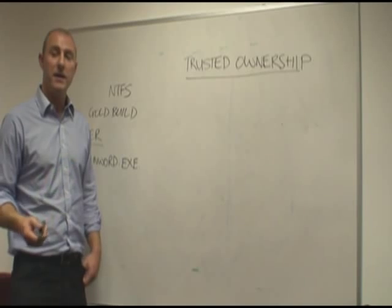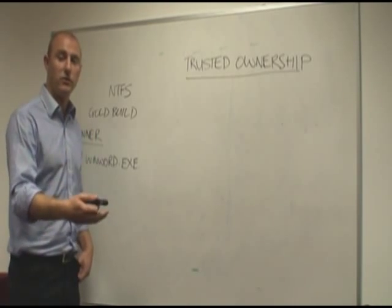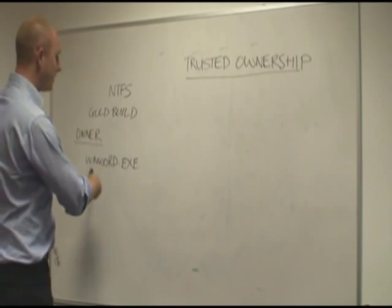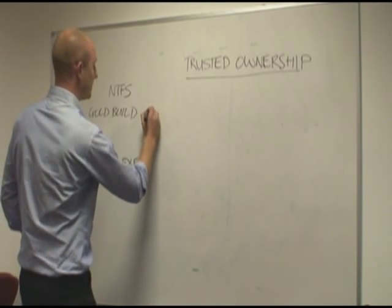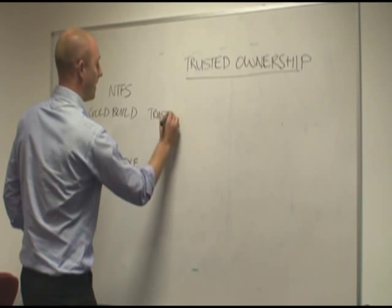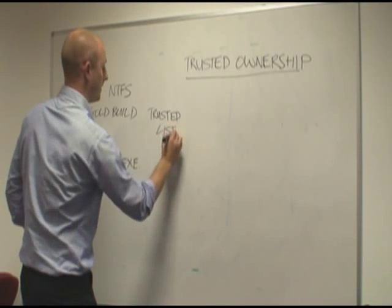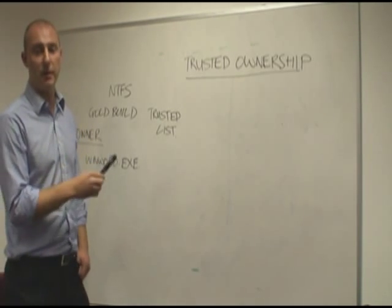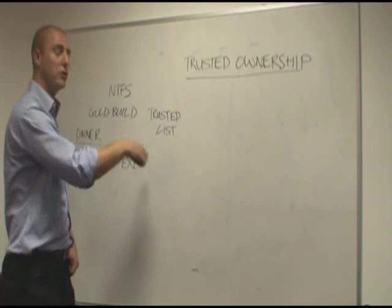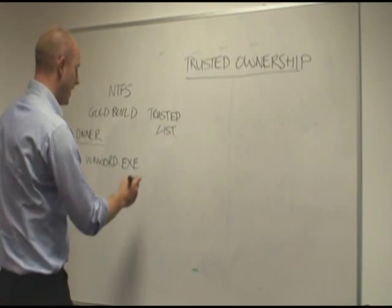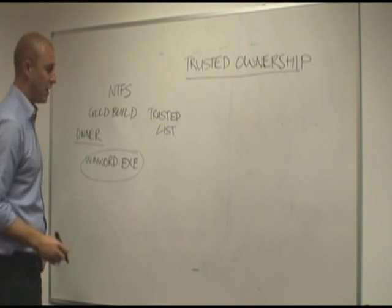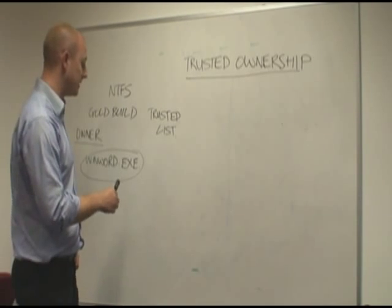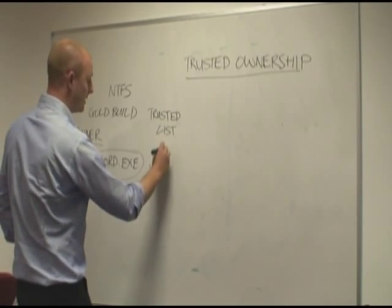What we basically do there is check who the owner of the file is — who has installed the product, who has introduced the executable into the environment. If the owner of the file is part of the trusted owners list, which can be determined, added to, and edited within the Application Manager console — which does come with an out-of-the-box config — the executable is allowed to launch.